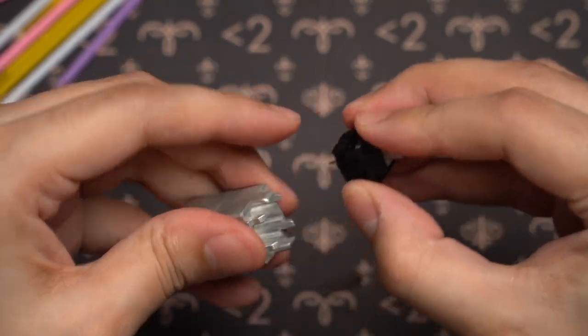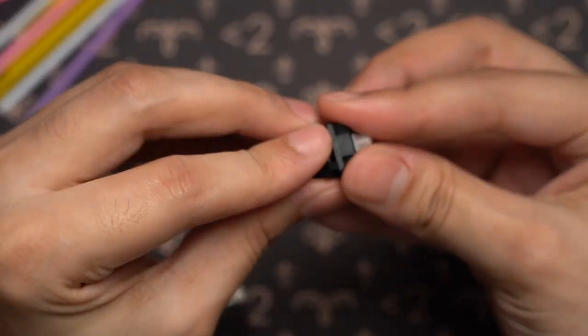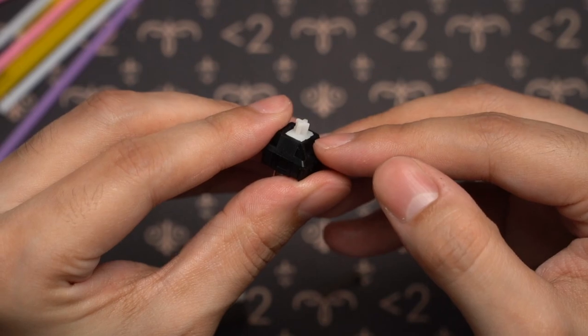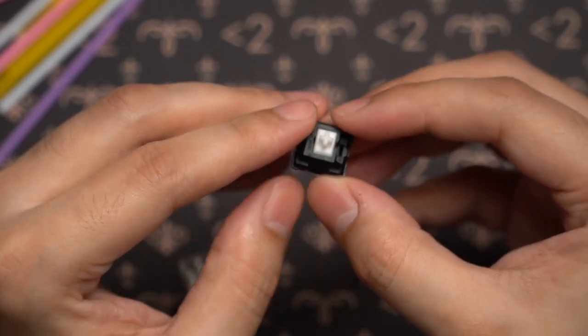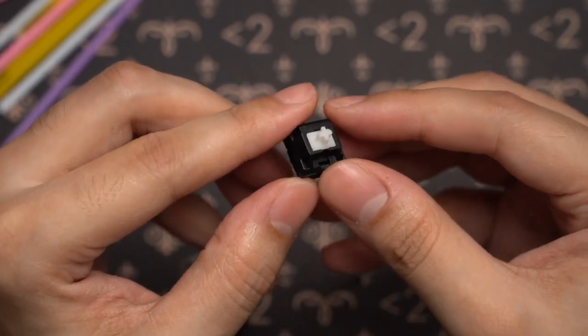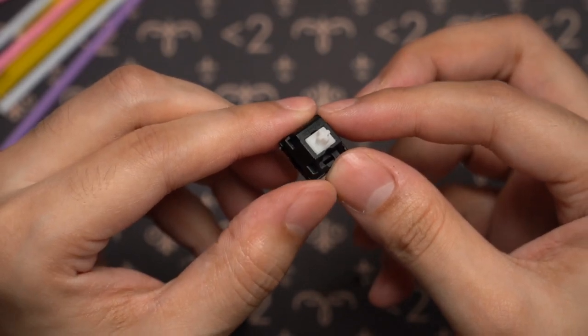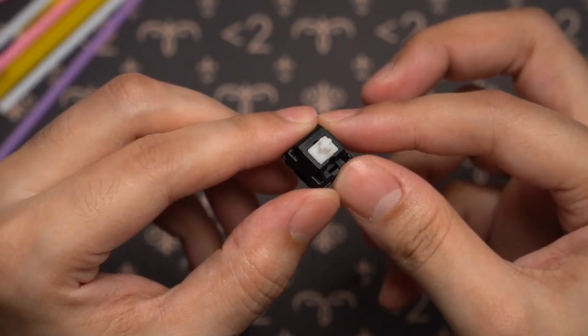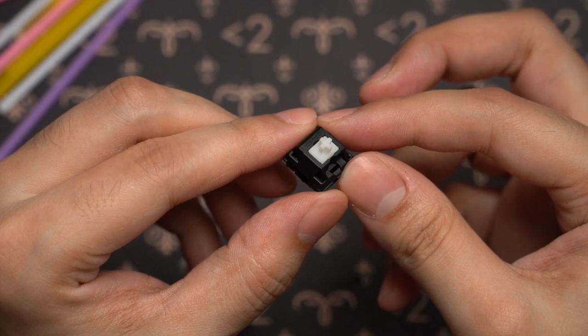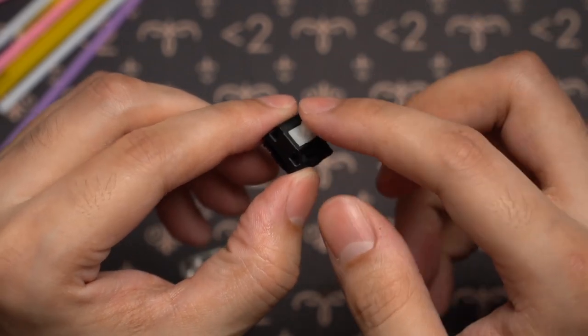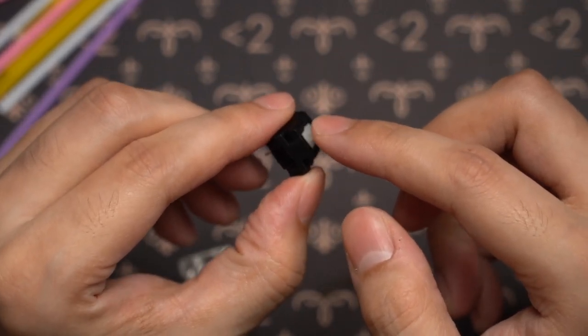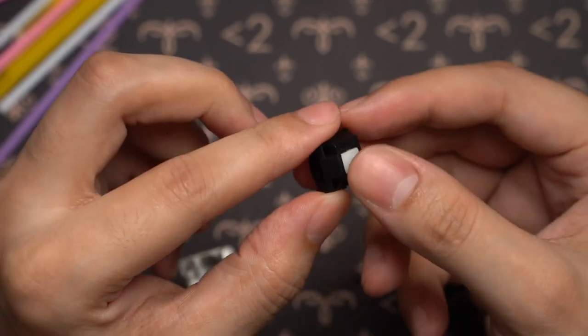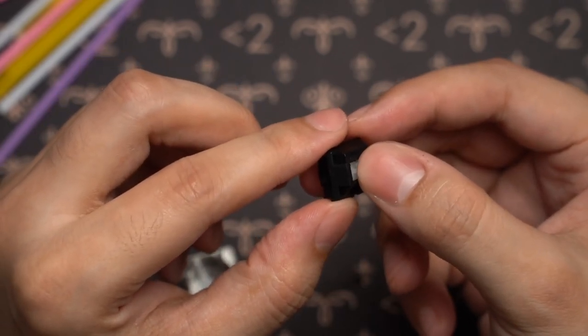So just like when lubing linear switches, we don't touch the top housing at all. We only lube the bottom housing and the spring. And the difference between the tactile lubing situation and the linear is that we do not touch the leaf ever. Now this is nice, quite tactile. Not bad at all.